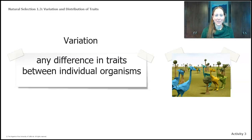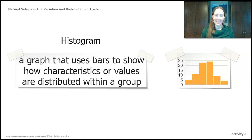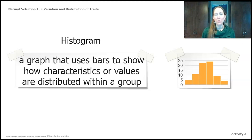That video helped add to your understanding of three more important words: variation, distribution, and histogram. Variation is any difference in traits between individual organisms — the ostrilopes had different colors and different neck lengths. Distribution is the number of individuals with each trait in a population — most ostrilopes are blue, many are yellow, very few are green. A histogram is a graph that uses bars to show how characteristics or values are distributed within a group. It's much easier to look at changes in populations if you can visually represent what the population looked like before and after. We'll use histograms a lot to show variation in populations.